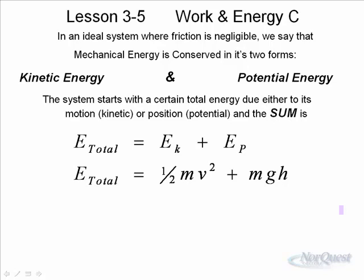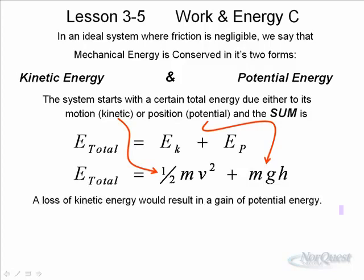That total energy can be either kinetic or potential. The kinetic energy formula is 1/2 mv squared and for potential mgh. The total has to be the sum of those two. If the total is always the same, then a loss of kinetic would result in a gain of potential.